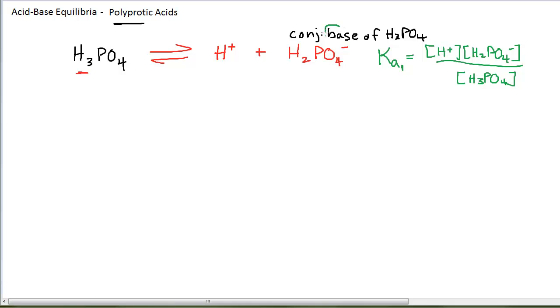This conjugate base of phosphoric acid, this dihydrogen phosphate ion, actually can also act like an acid. H2PO4- is amphiprotic or amphoteric. It can act as either an acid or base. Which it behaves like depends on what you put it with. If I just put it with water, it's going to act like an acid.